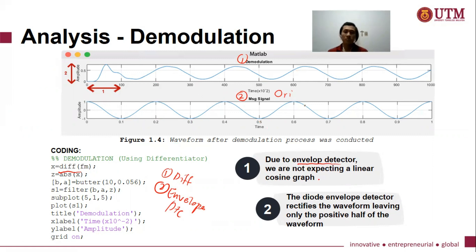The envelope AM signal will then have the information that can be detected using the envelope detector, which means you will get the envelope AM signal after the differentiator process.